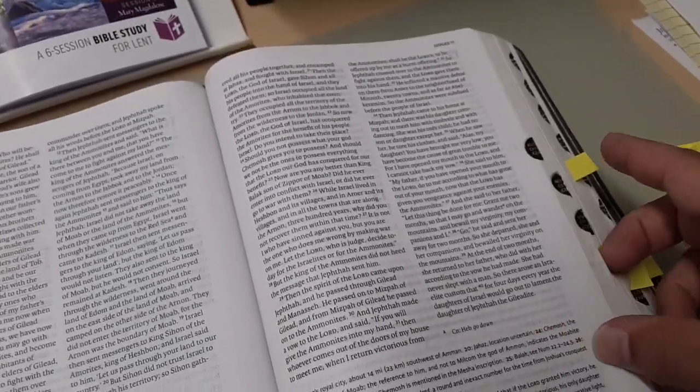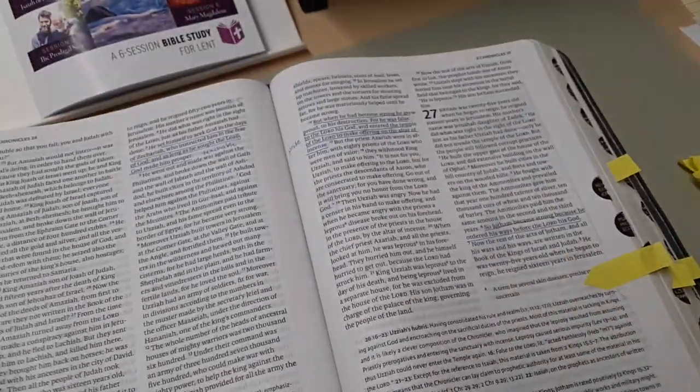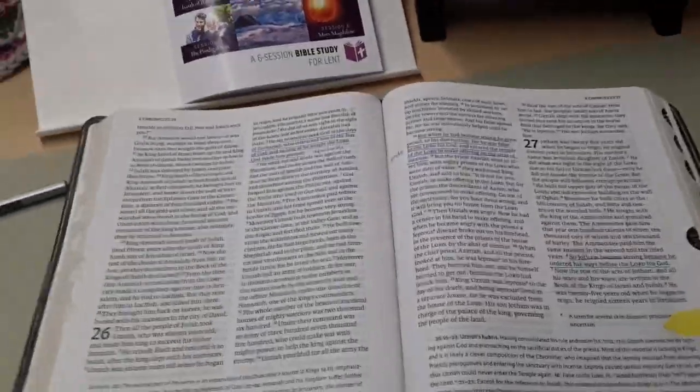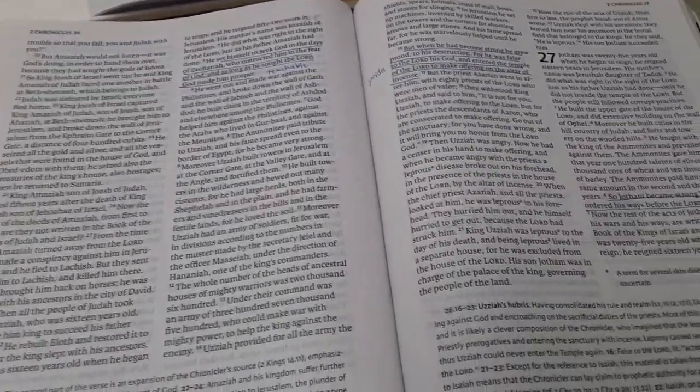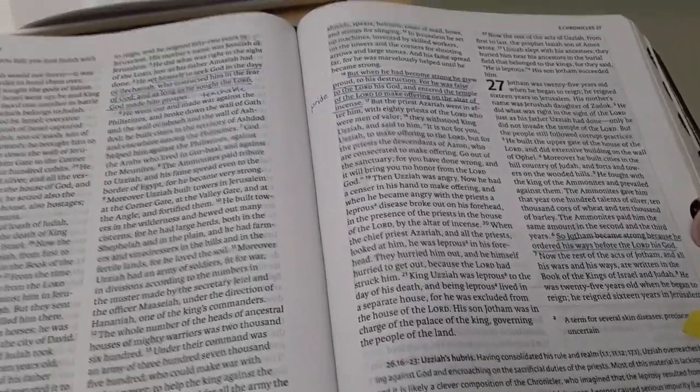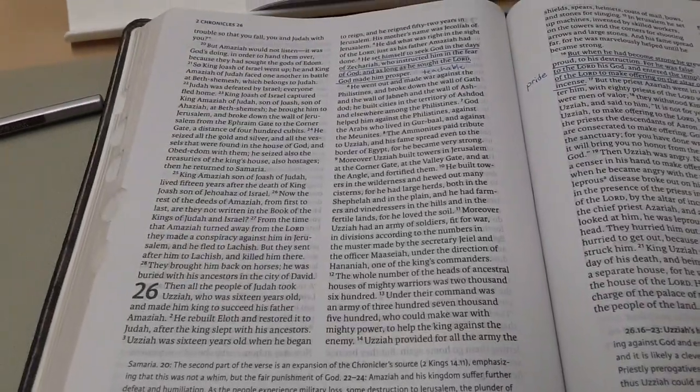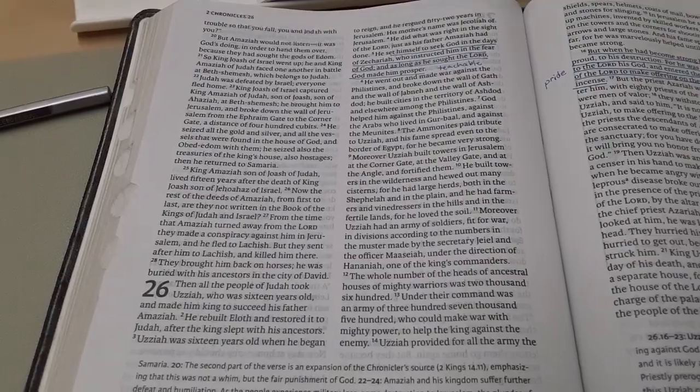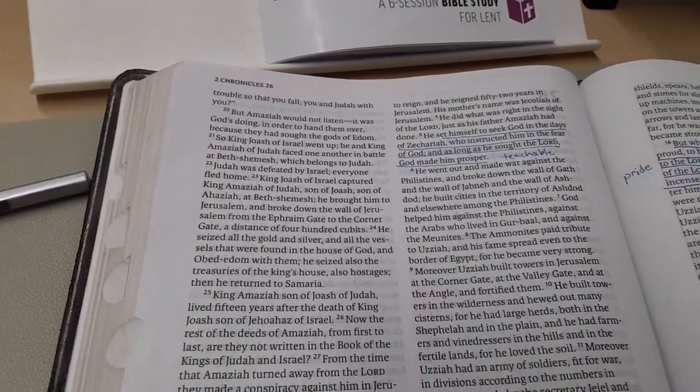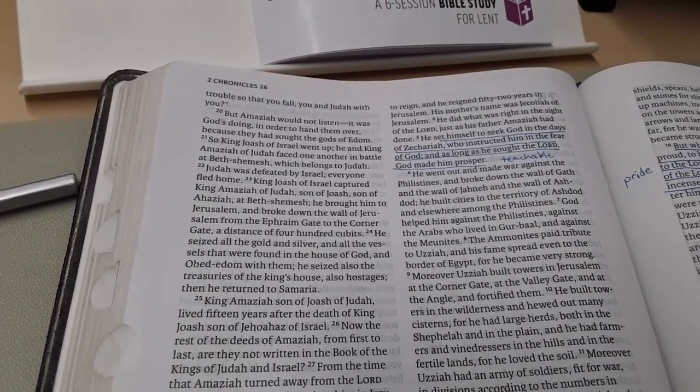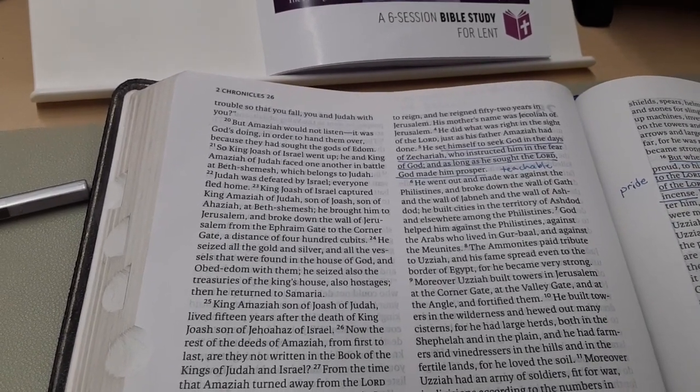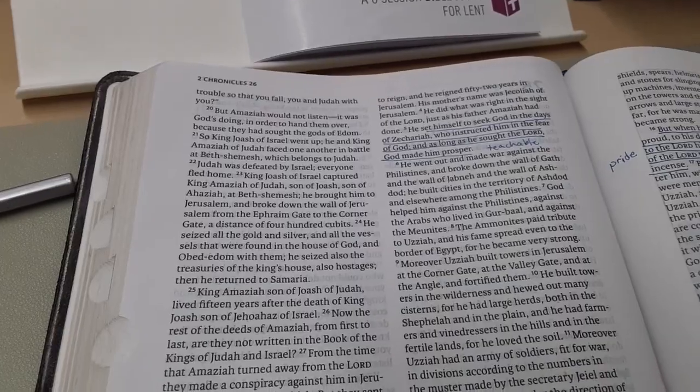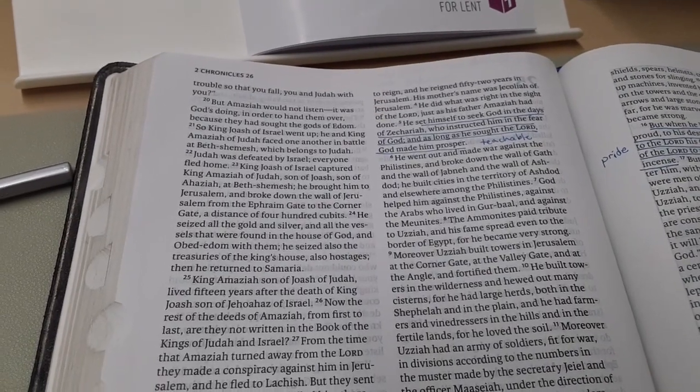So general insights and insights are spiritual as well as intellectual. Here we have blue, which is wisdom and discipleship. So this is about Uzziah. It said that Uzziah was teachable. He set himself to see God in the days of Zechariah who instructed him in the fear of God. And as long as he sought the Lord, God made him prosper. So to me, that's wisdom discipleship.